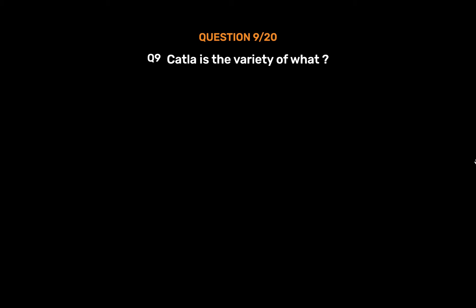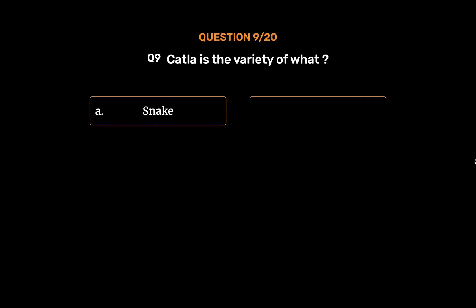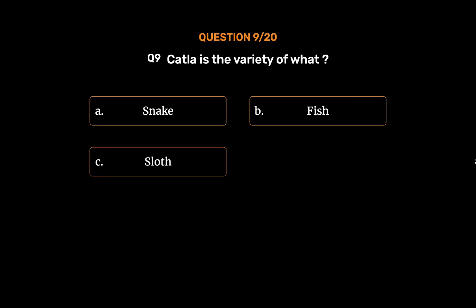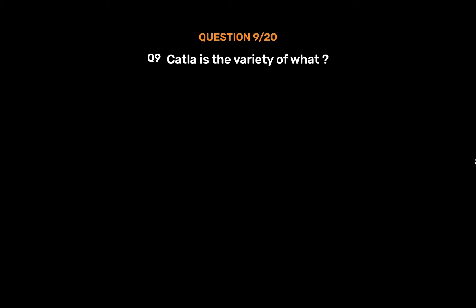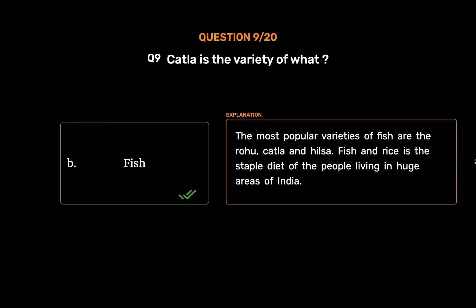Question number 9. The most popular varieties of fish are the rohu, katla and hilsa. Fish and rice is the staple diet of the people living in huge areas of India.